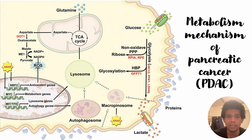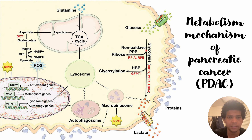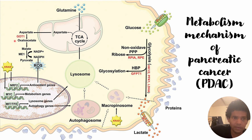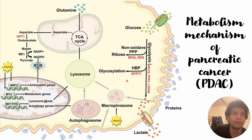These essential functions include the PPP — the pentose phosphate pathway — which involves non-oxidative phosphate reactions essential for cell survival. Also, the HBP helps in glycosylation, or post-translational modification, specifically glycosylation of glycoproteins, which usually occurs in the endoplasmic reticulum and the Golgi apparatus.